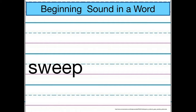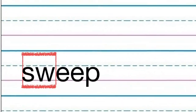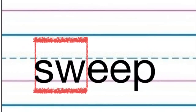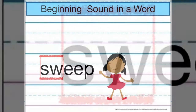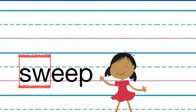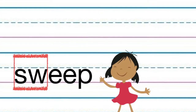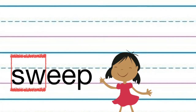Let's try another one. What do you hear at the beginning of this word? That's right — S and W create the beginning sound we hear: SW. I learned that when S and W are put together, they make the sound SW.